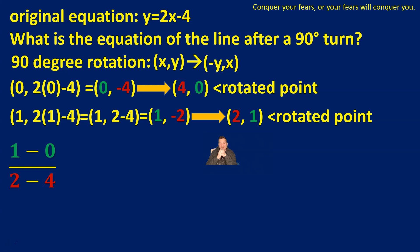It's going to look like the following: (1 minus 0) divided by (2 minus 4). If you look at the color coding carefully, I'm using the rotated points to compute the slope of the new 90 degree turned line. I'm taking this 1 in green and subtracting the 0 in green, and dividing by the 2 in red diminished by the 4 in red. That's going to give me negative 1 half, which becomes negative 0.5, and that is the slope of the line turned 90 degrees with respect to 2x minus 4.